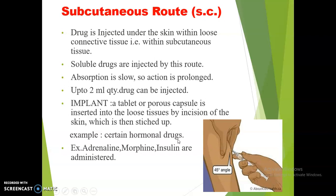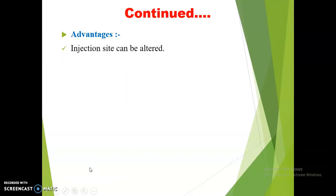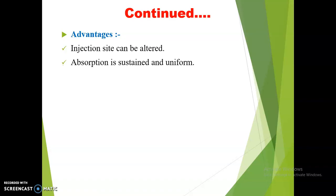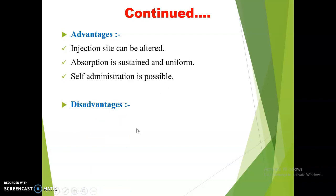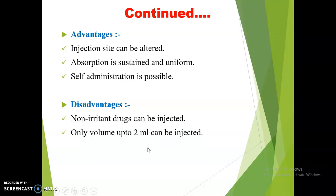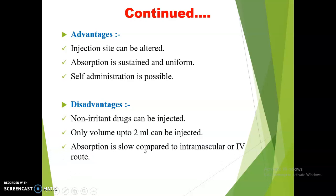Examples of implants include certain hormonal drugs. Advantages of the subcutaneous route include variable injection sites, slow and sustained uniform absorption, and self-administration is possible — the best example being insulin injection in diabetes mellitus. Disadvantages include that only non-irritant drugs can be injected, volume is limited to 2 ml, and absorption is slow compared to other routes such as intramuscular and IV.